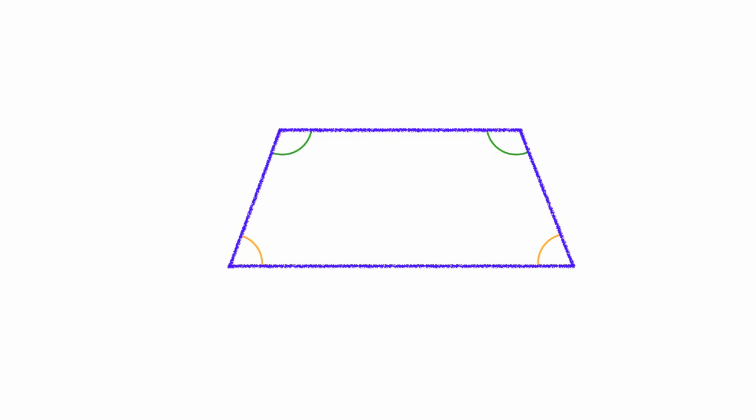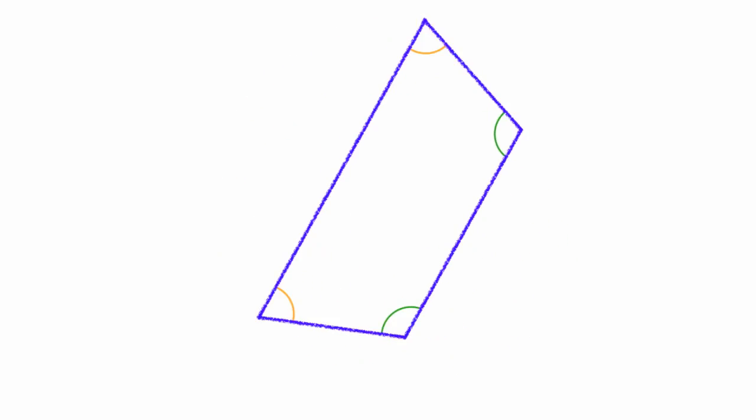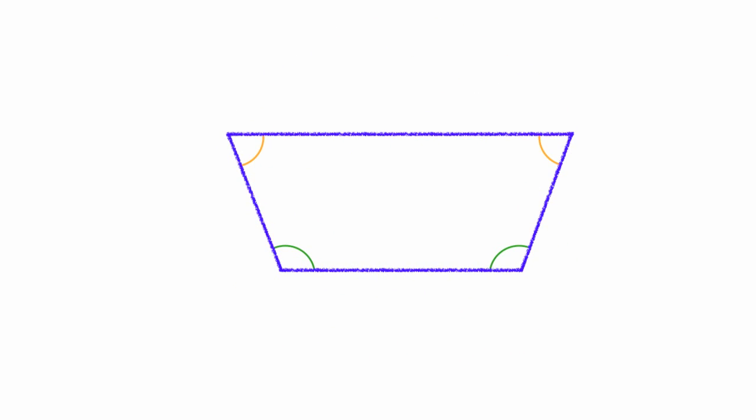It's kind of hard to see those are the same. So let me rotate the trapezoid over like that. Now you can easily see that the bottom angles now are green and they're the same. And of course, the top angles remain the same as well.